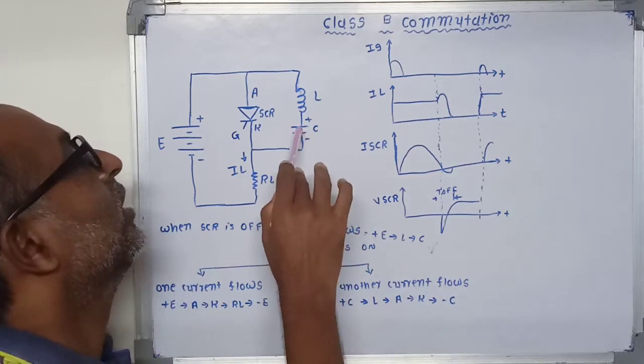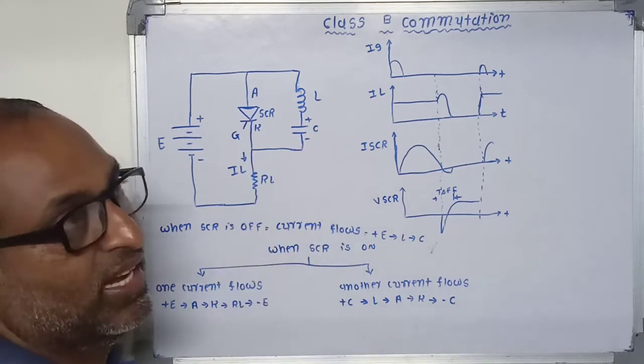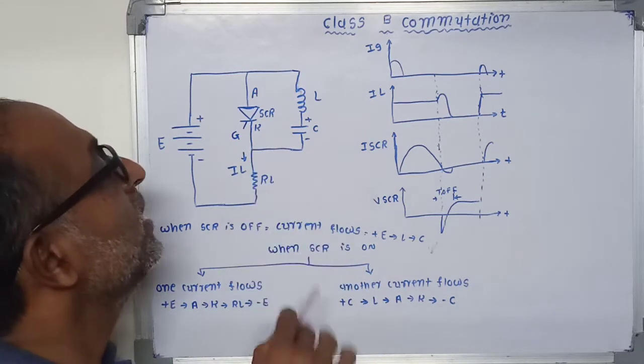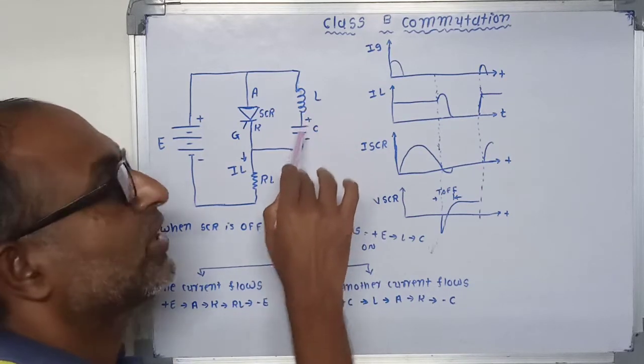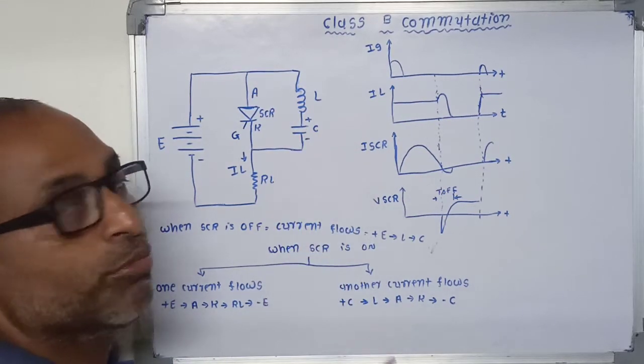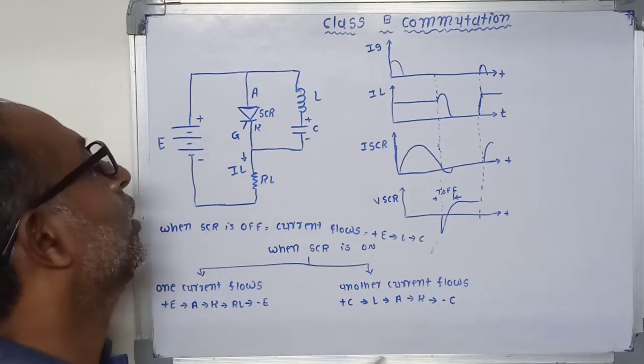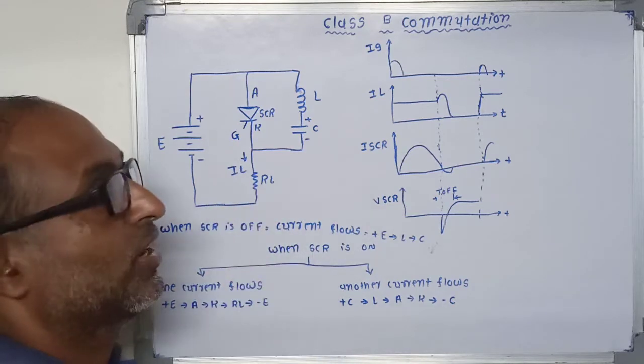Due to this, reverse voltage is applied across the SCR. The capacitor constitutes a commutating current IC, which is in opposite direction to the load current.